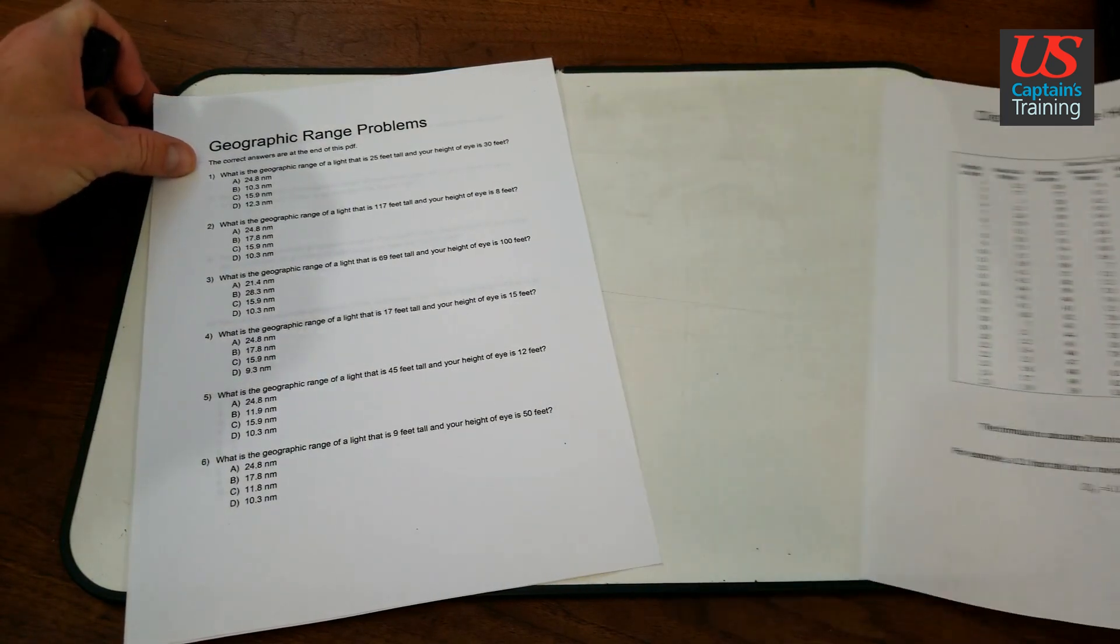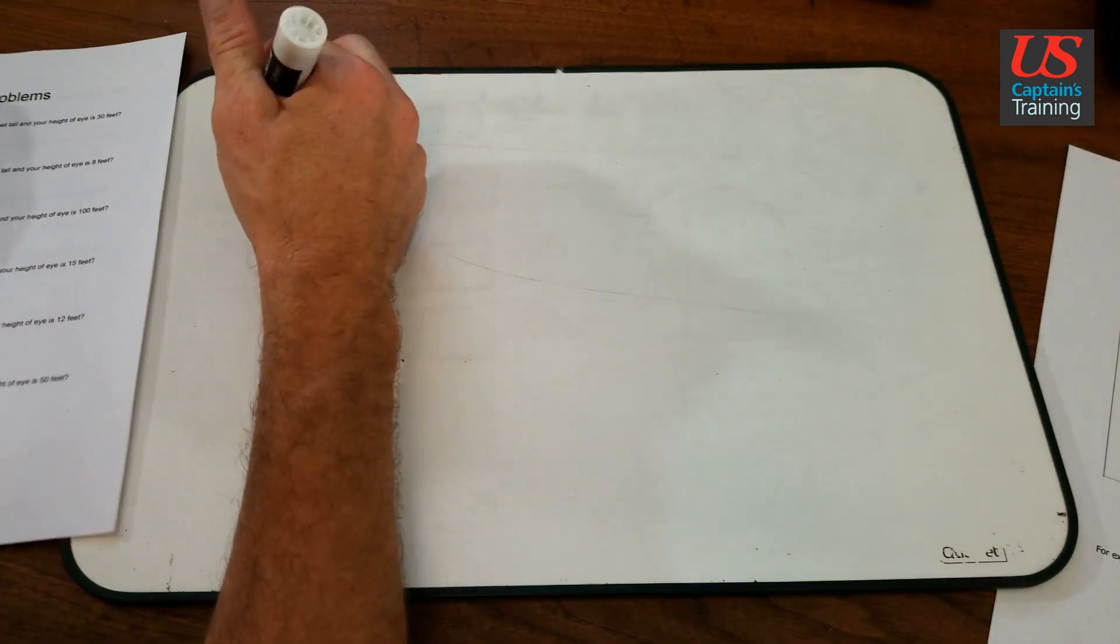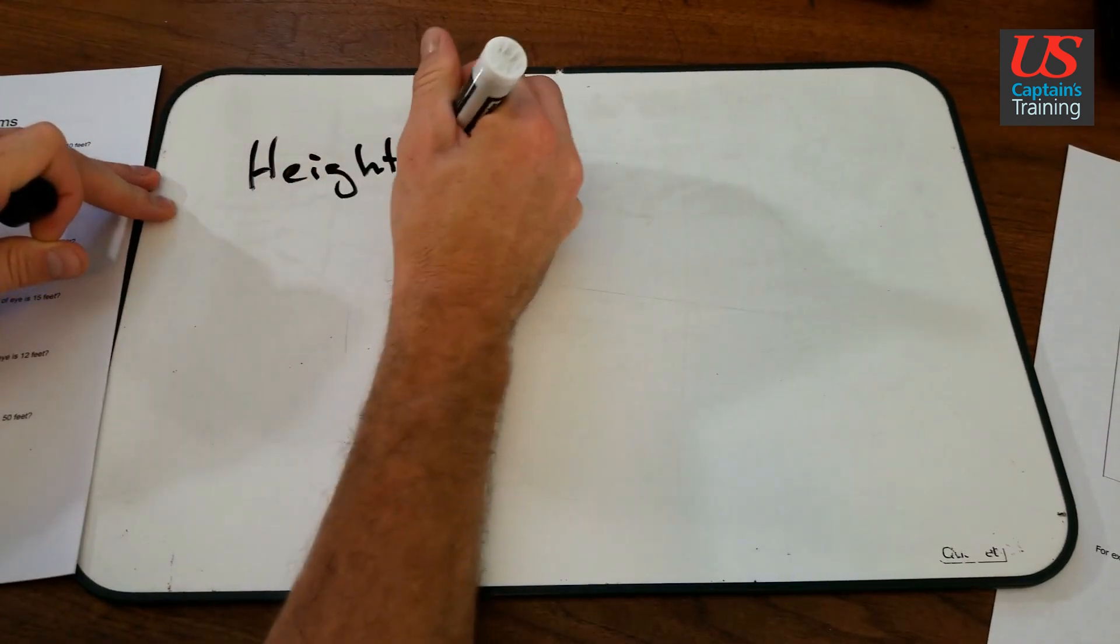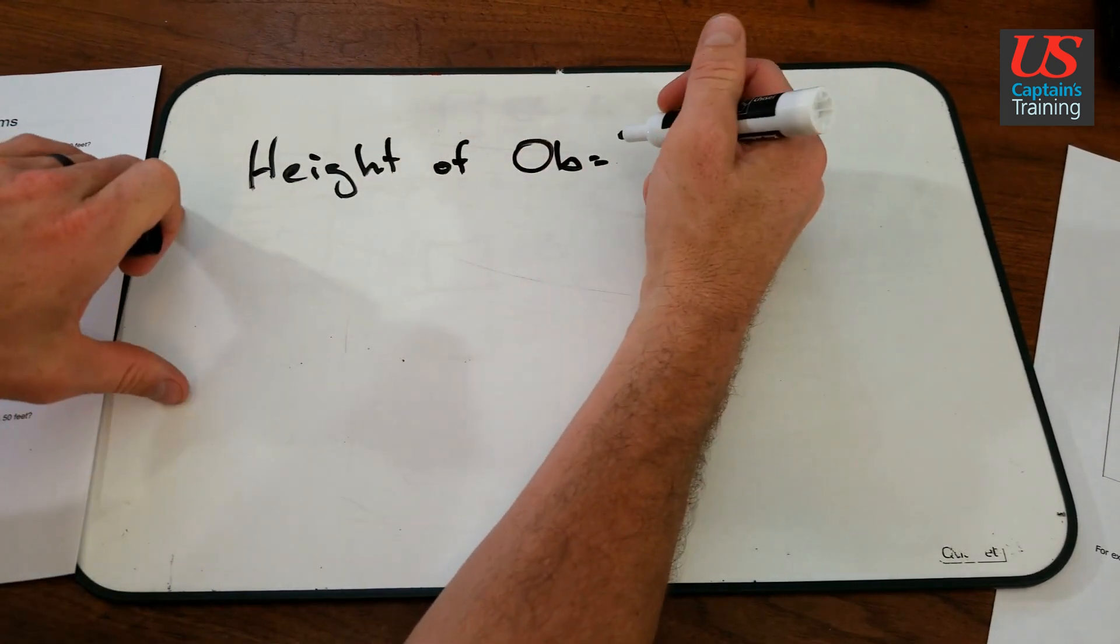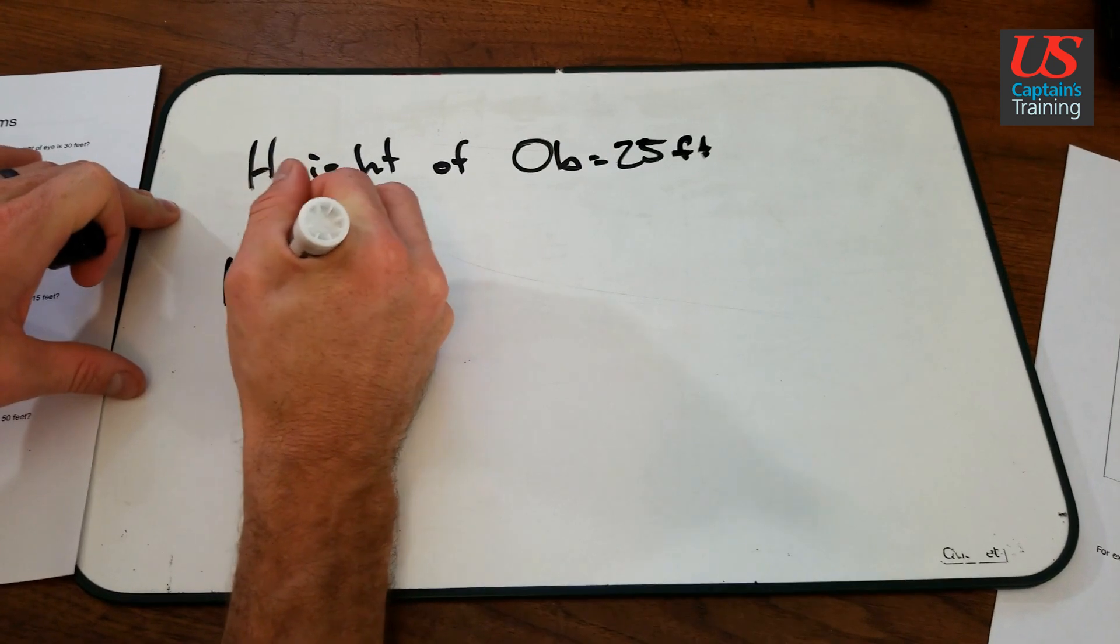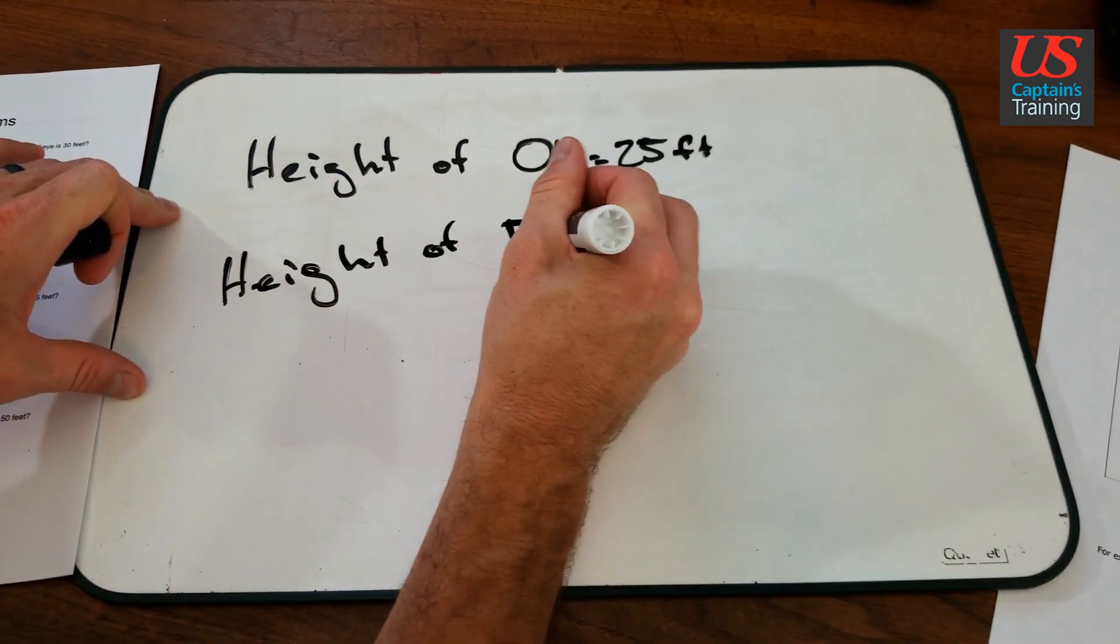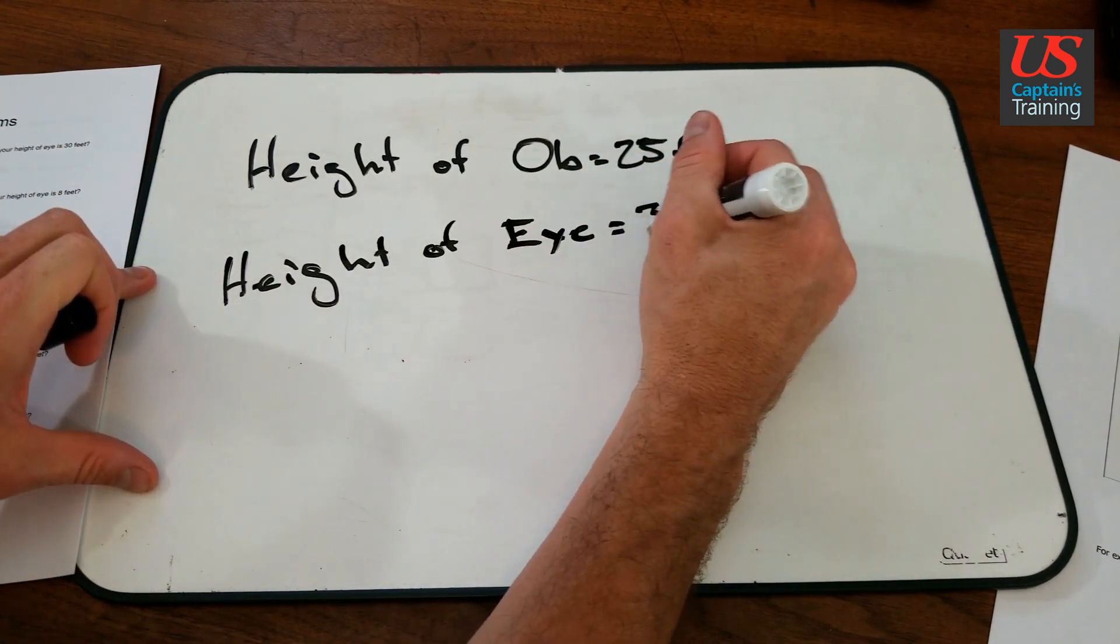So we take the height of the object or the light, put it here. Height of object equals 25 feet. And the height of your eye equals 30 feet from the problem.